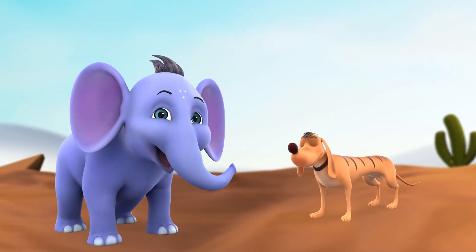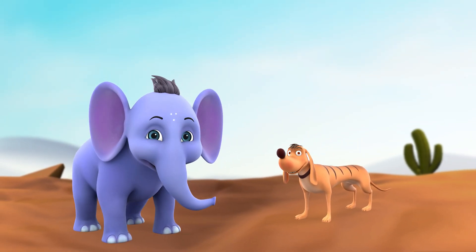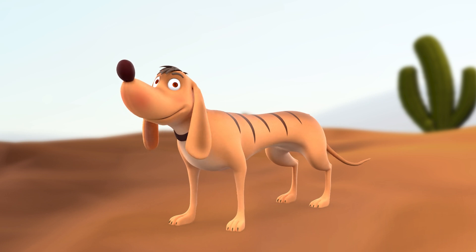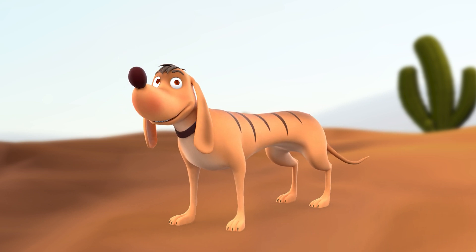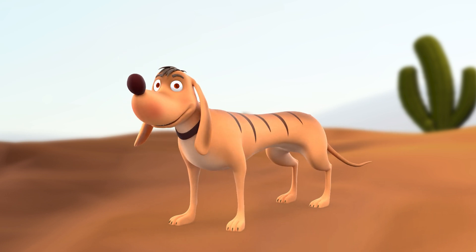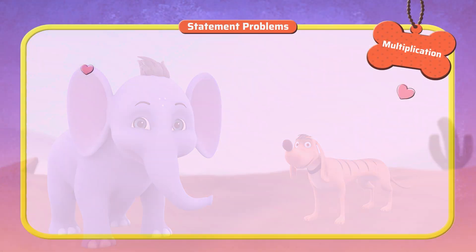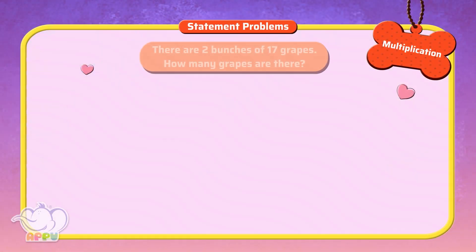How about we do an exercise that Tiger finds most exciting? Let me guess — statement problems? You got it right! There are two bunches of 17 grapes. How many grapes are there?